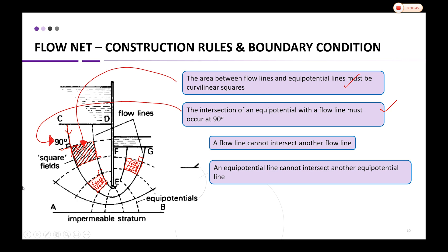A flow line cannot intersect another flow line. If you already have one flow line and then draw another that crosses it, that is wrong. The same applies to equipotential lines — if you draw an equipotential line that intersects another equipotential line, that is also not permitted.